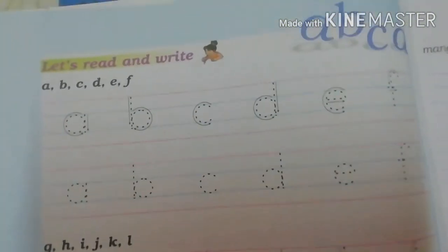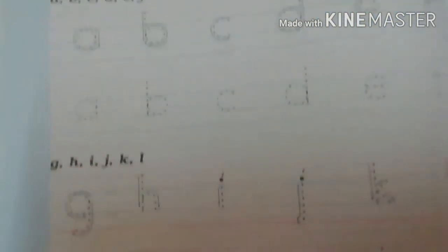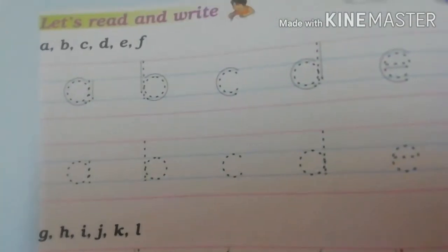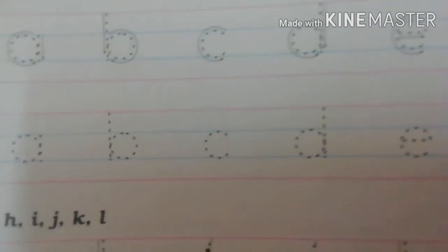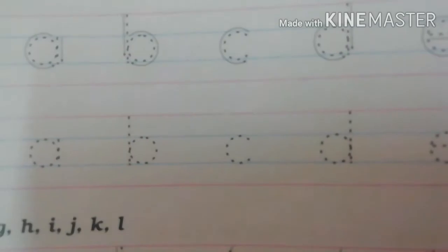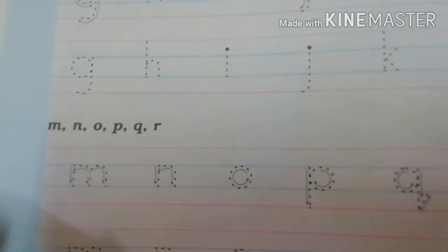This exercise also: Tracing — A, B, C, D, E, F, G, H, I, J, K, L, M, N, O, P, Q, R. Yeh bhi aapko ismein book mein trace karna hai. Okay children, these exercises also you will do on page number 60 in your book. Now come to the next exercise.